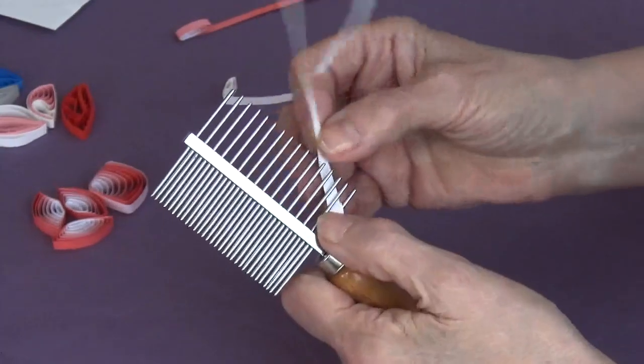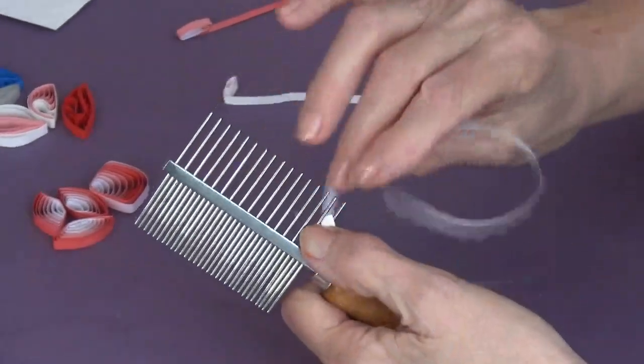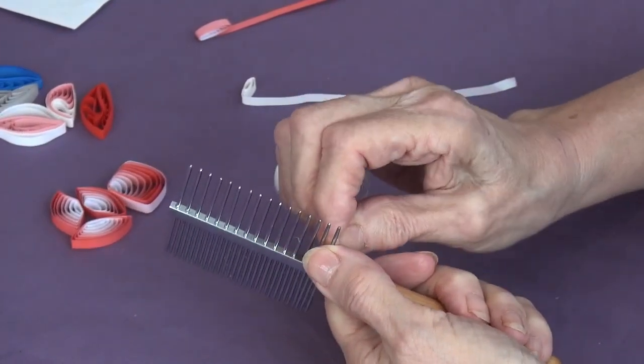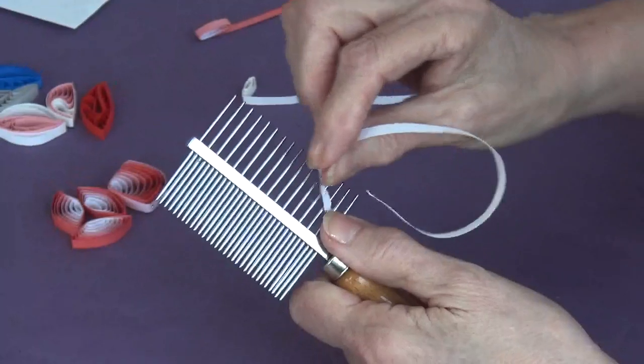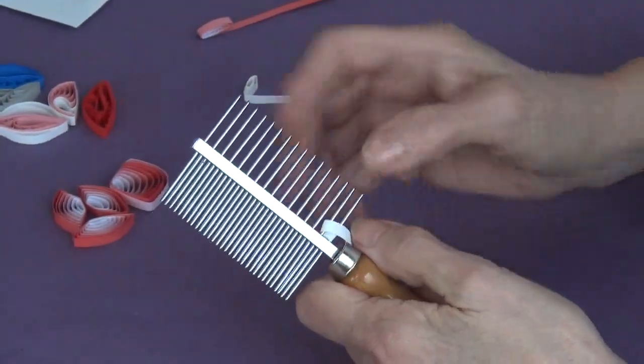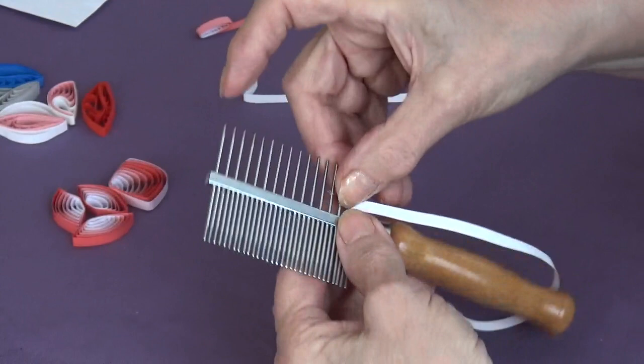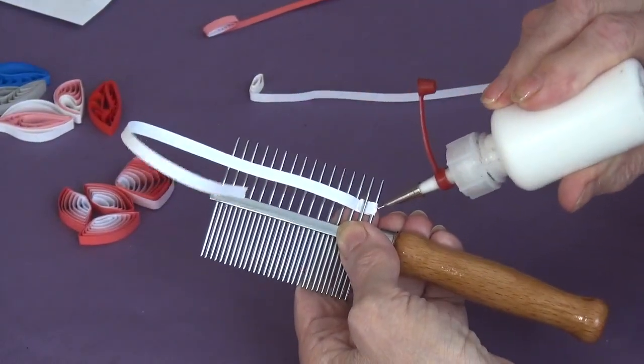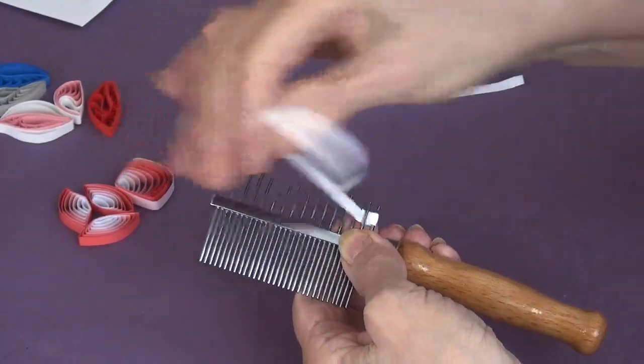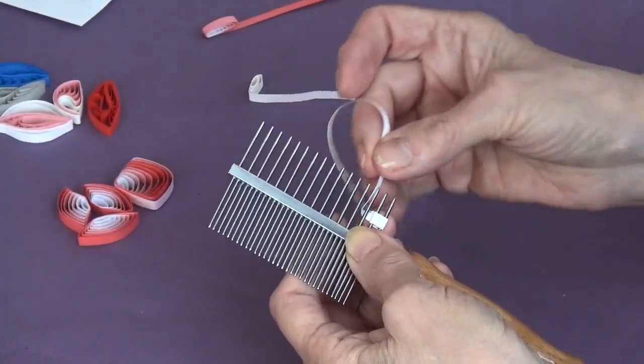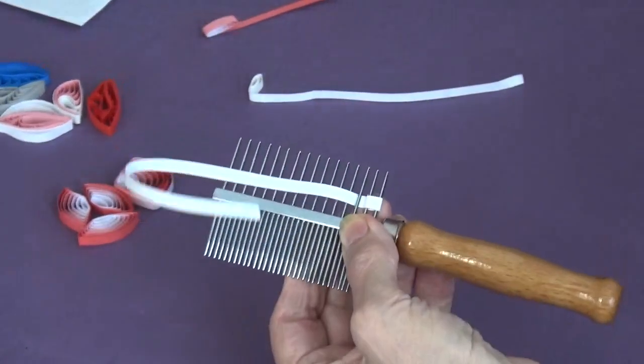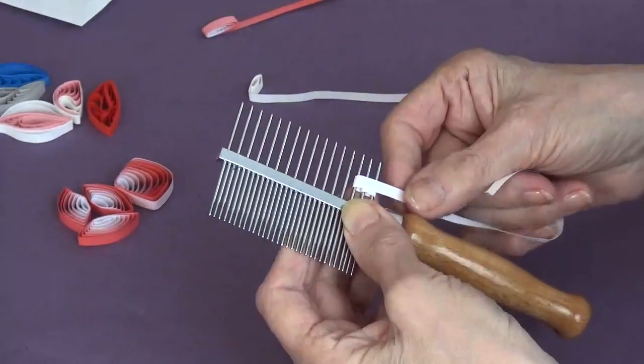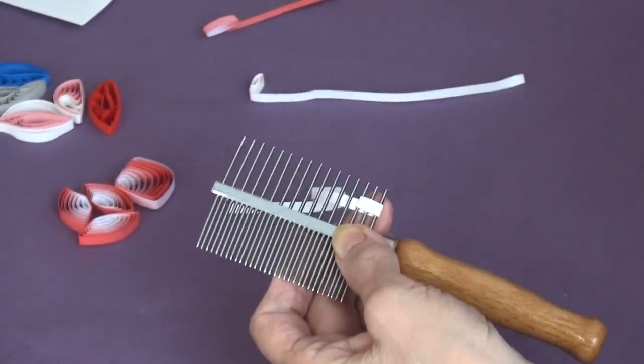And then you can put the glue as you're going here. And up to the next prong. You know, you can get these, this is a pet comb that I got from the pet shop. I mean, for your dog or your cat.